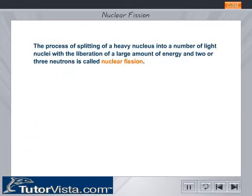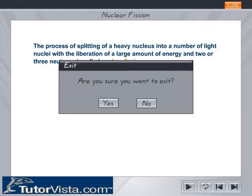The process of splitting of a heavy nucleus into a number of light nuclei with the liberation of a large amount of energy and two or three neutrons is called nuclear fission.